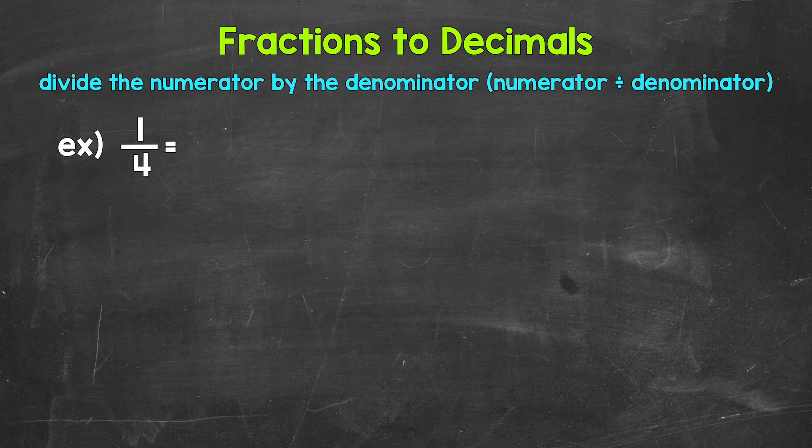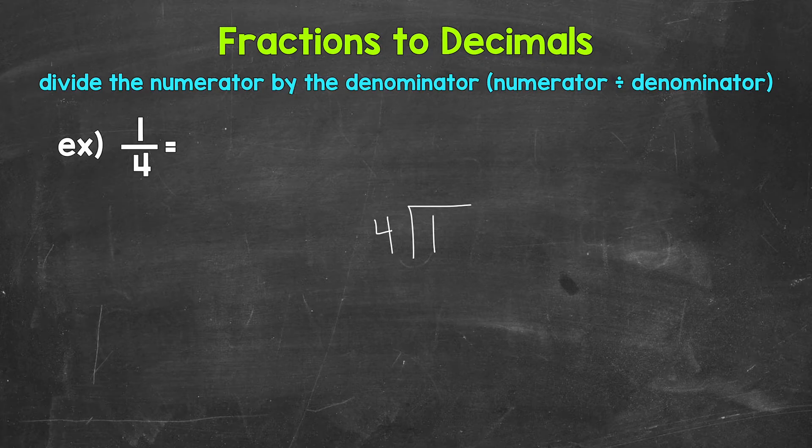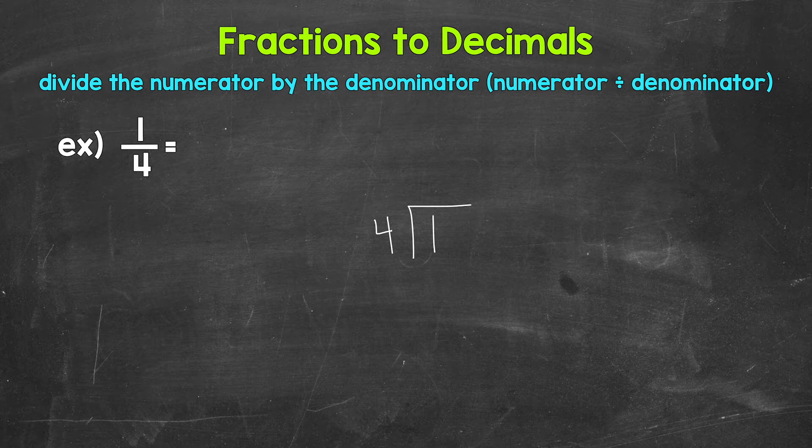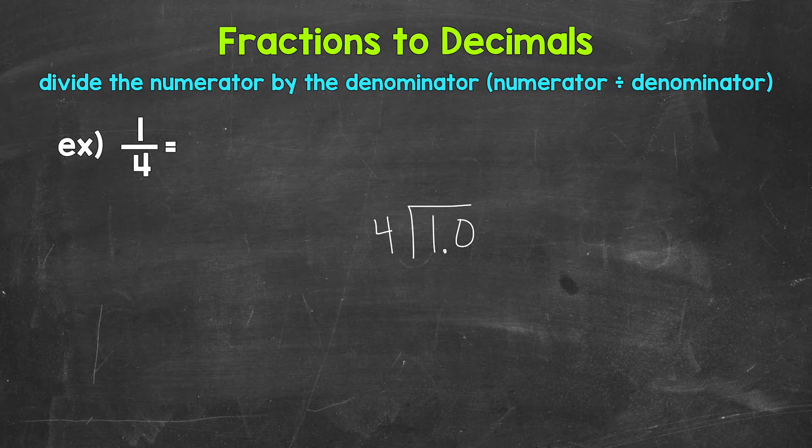So for 1/4, we can set this up as 1 divided by 4. Now we need to go through the division process. So we have 1 divided by 4. How many whole groups of 4 in 1? How many 4s in 1? Well, we can't do that. So we need a decimal and a 0 in order to work through this. Once we have the decimal and the 0, we can bring the decimal straight up into where the quotient, the answer, will be.